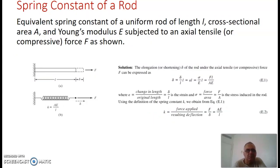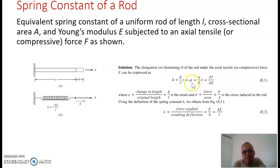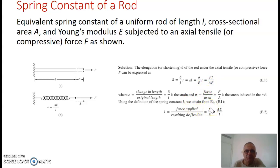Now let's see some examples of springs. For example, the spring constant of an axial rod in vibration: if you apply a certain force to an axial rod, it will deform an amount delta. From strength of materials, we know that the strain is stress over the modulus of elasticity, from which we can find that the deformation is FL over AE. Since we want to find F equals kx, the spring constant is the force over the deformation, so it will be AE over L for a rod in axial deformation.